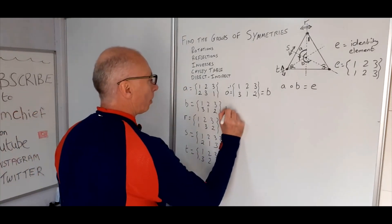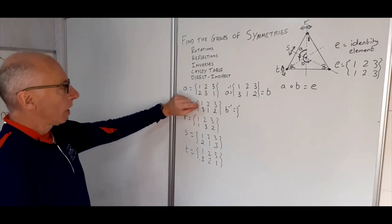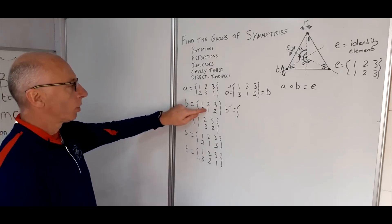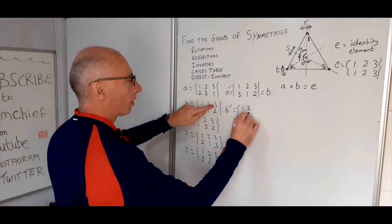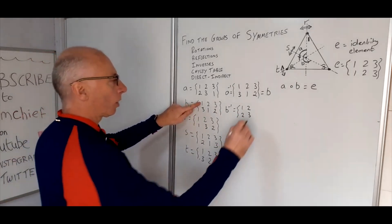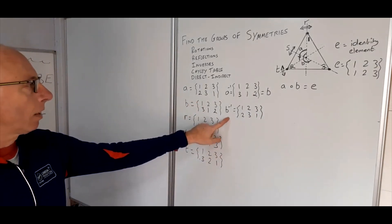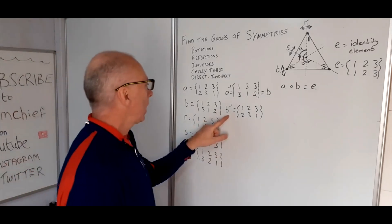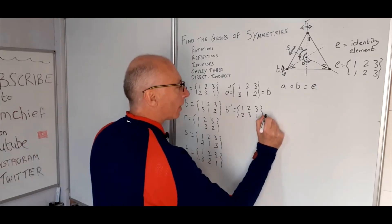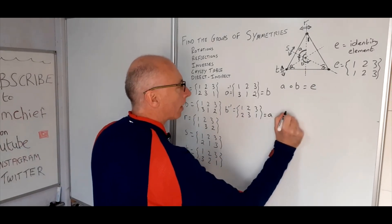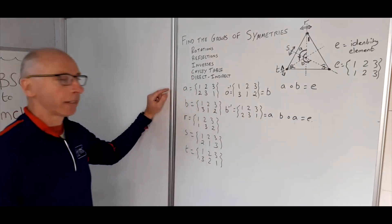Now let's find the inverse of B. If we flip it upside down: one will go to two, two will go to three, and three will go to one. Using this upside-down method, we've shown that B acting upon A gives us the identity — so B composite A is also the identity element, meaning the inverse of B is A.